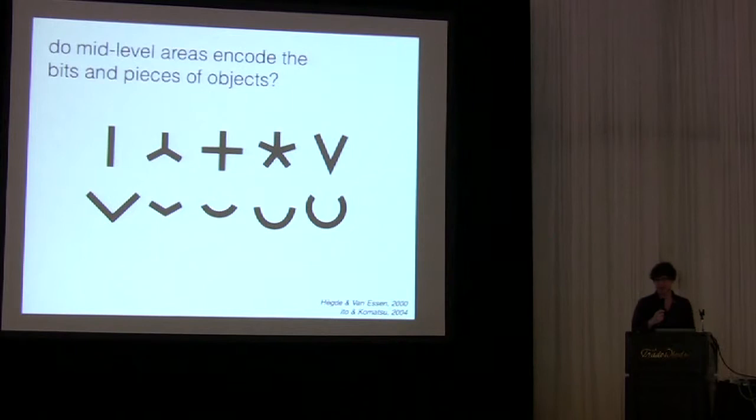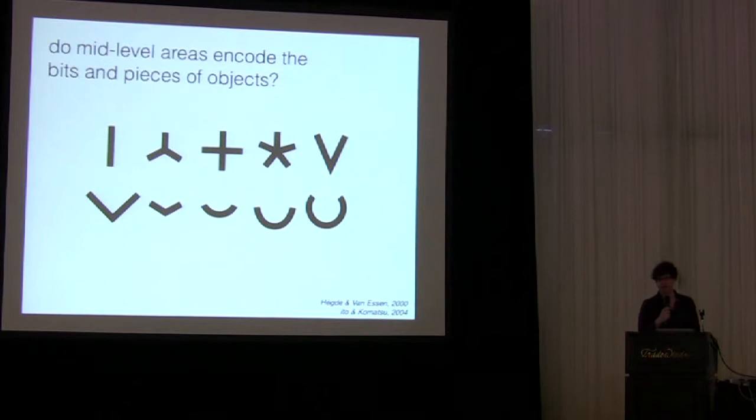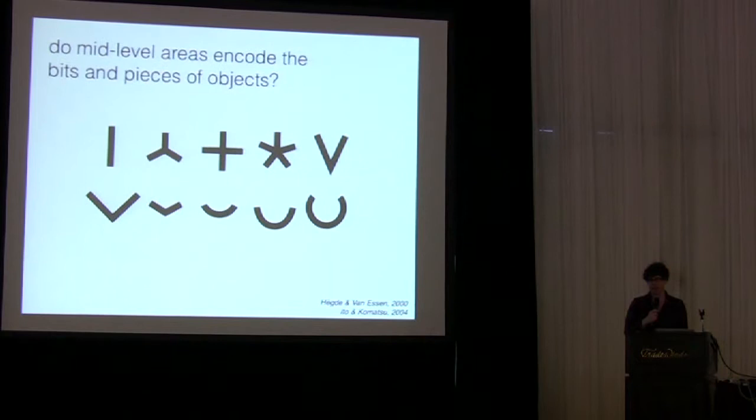And stimuli like these, by and large, have failed to robustly differentiate responses in, say, area V2 compared to V1. So to make that idea a little more explicit, I think it's worth taking a look at what's actually out there in the world and see whether these kinds of things show up.